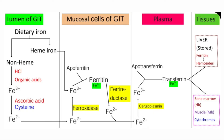Iron present in foods is mostly in ferric form, that is Fe3+ form, and it is bound to proteins or organic acids. The HCl present in the gastric juice liberates the ferric form of iron from the foods. Reducing substances like ascorbic acid, cysteine, and glutathione convert the ferric form to ferrous form, that is from Fe3+ to Fe2+ form of iron.